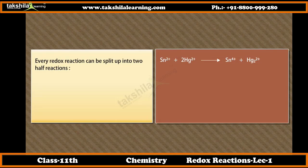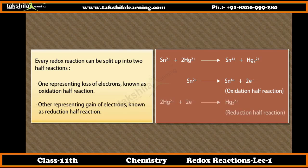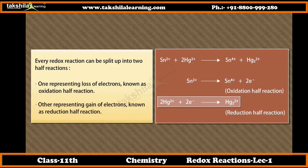Every redox reaction can be split up into two half reactions: first, representing loss of electrons, known as the oxidation half reaction; and second, representing gain of electrons, known as the reduction half reaction. The reaction can be split as: Sn2+ gives Sn4+ plus 2 electrons (oxidation half reaction); and 2Hg2+ plus 2 electrons gives Hg2 2+ (reduction half reaction).